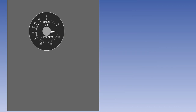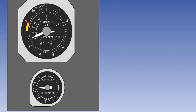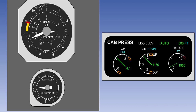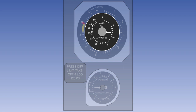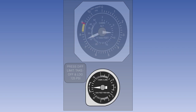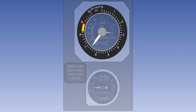The minimum indications required for a pressurization system are cabin altitude, cabin vertical speed, and cabin differential pressure. This information can either be presented on direct reading gauges or electronically on an LCD screen. The cabin altimeter measures cabin pressure, but it is expressed on the gauge in terms of the equivalent pressure altitude of the cabin. The cabin vertical speed indicator (VSI) indicates the rate at which the aircraft cabin is climbing or descending.